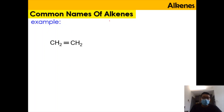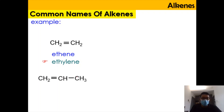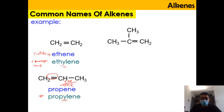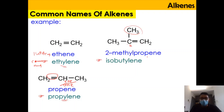Looking at the common names of alkene: when it has 2 carbons, the IUPAC name is ethene and the common name is ethylene. If it has 3 carbons, the IUPAC name is propene — the '-ane' ending of alkane is changed to '-ene' for alkene. The common name is propylene. For 2-methylpropene, the common name is isobutylene.